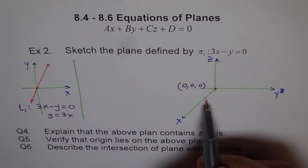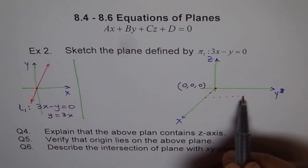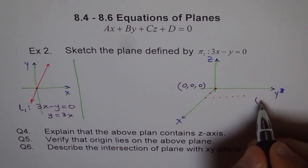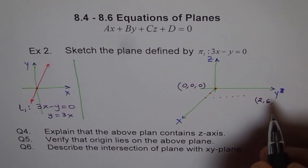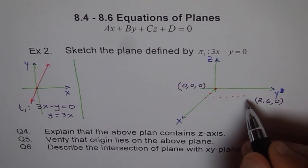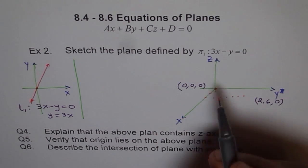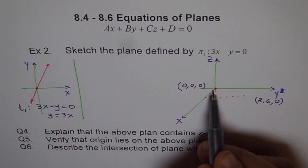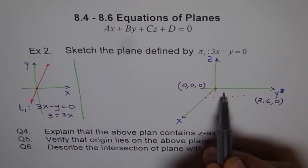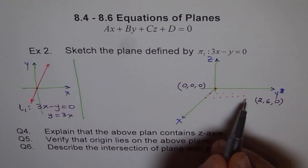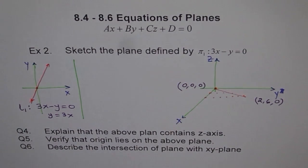y will be 6, so that point is (2, 6, 0). You'll note that this point is on the xy-plane and the value of z is 0. Similarly, if x is 1, then y will be 3 times 1, which is 3, giving us the point (1, 3, 0). If I join these points I get the line 3x minus y on the xy-plane — that line represents 3x minus y in two dimensions.